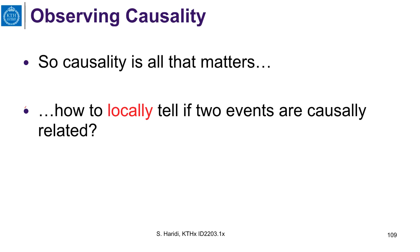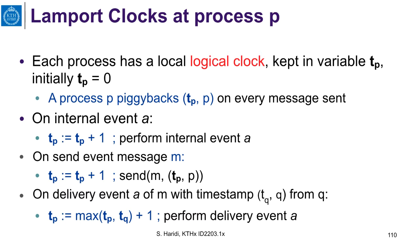So now, how to locally tell if two events are causally related? Remember, we are in the asynchronous system model and causality is all that matters. The first type of clock we are going to define is called the Lamport clock. Each process has a local logical clock, kept in a variable tp for process p, and it is initially zero.